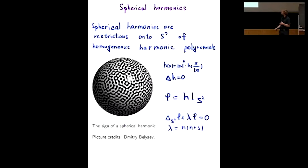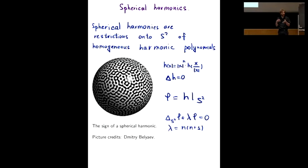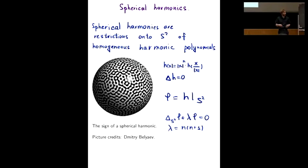Here is another question about homogeneous polynomials, but with an additional structure: assume that the polynomial is also a harmonic function. You can see a picture — this is the sign of a spherical harmonic. Spherical harmonics are restrictions of homogeneous harmonic polynomials, and the zero set is very structured in some sense and chaotic in another. This is the sign of some random spherical harmonic of degree 50. You can ask the same questions: estimate the number of curves, the number of nodal domains, the topological complexity.